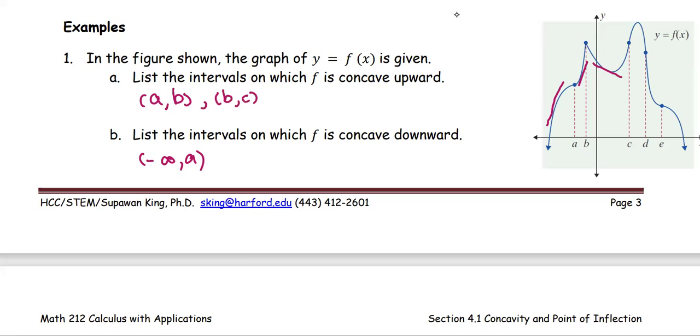And then from c to d, the tangent line is above the graph. Therefore, between c and d, the graph is concave downward.